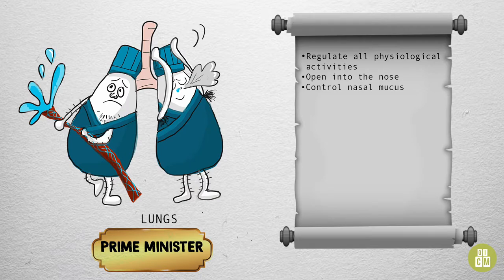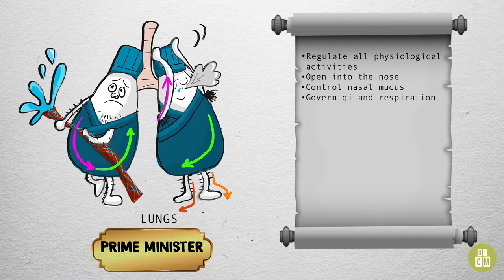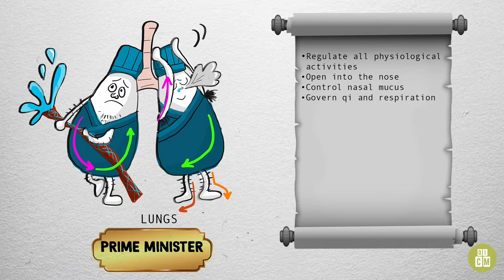The lungs govern qi and respiration. Our two lungs have brightly colored arrows, reminding us that the lungs control the diffusing and descending of qi throughout the body. Imagine taking a breath in — starting in our noses, the air enters into our bodies and then travels down and spreads out into the body.